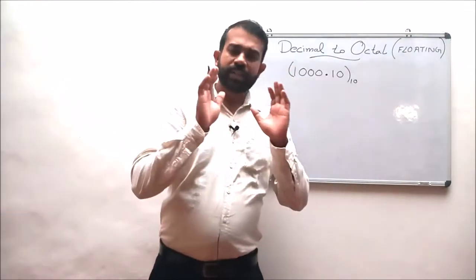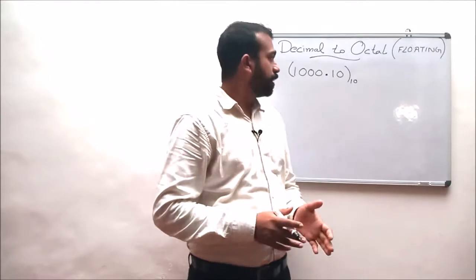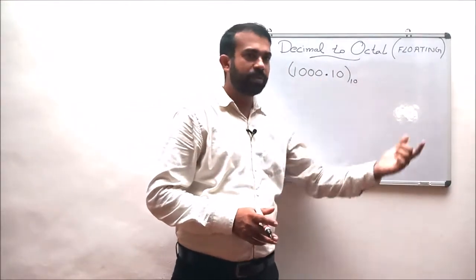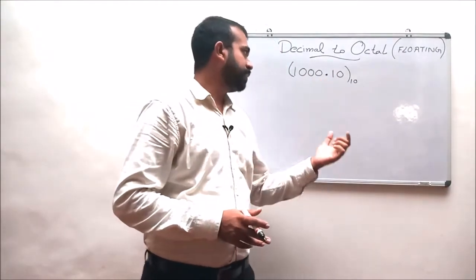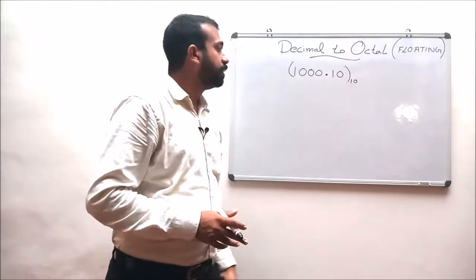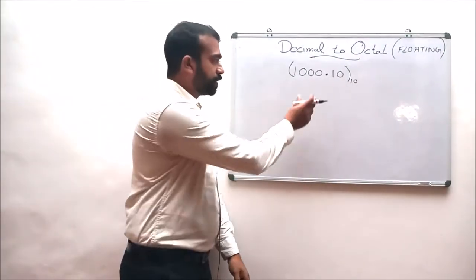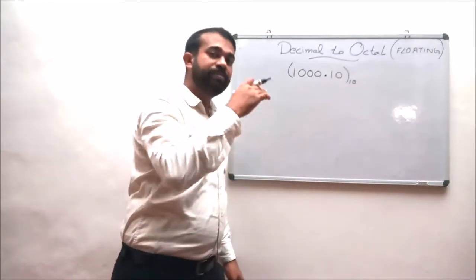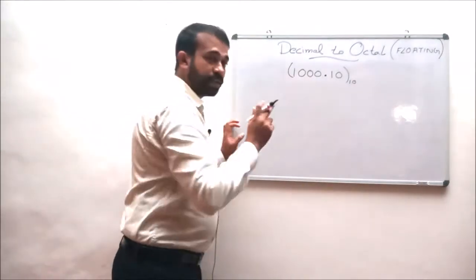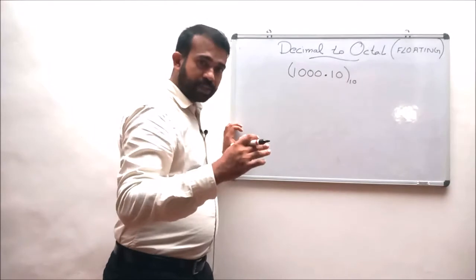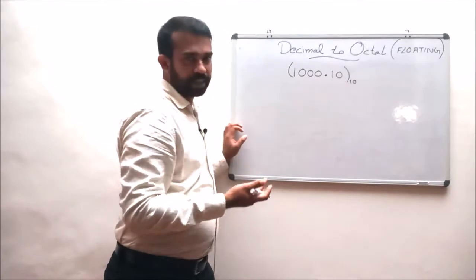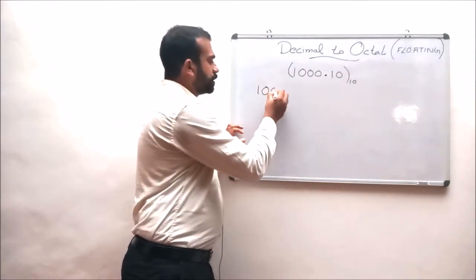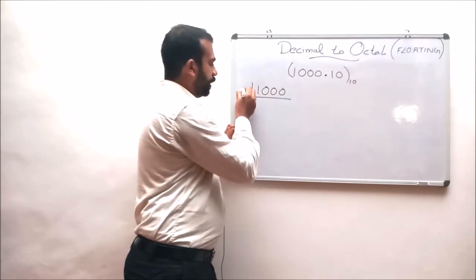Now let us consider one more example. The decimal number is 1000.10 to the base 10. We have to find its octal equivalent. Here also we can see two portions — the whole number portion as well as the fractional portion — so there are two steps. The first step is converting the whole number portion into its octal equivalence.